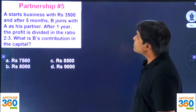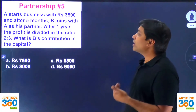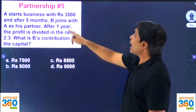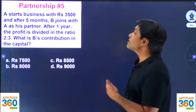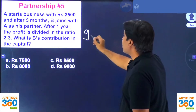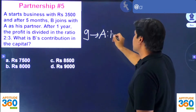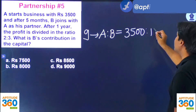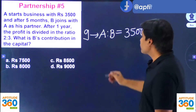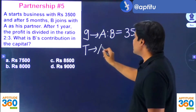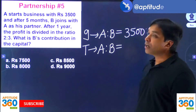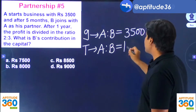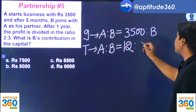The first question says that A starts a business with rupees 3500 and after 5 months B joins A as his partner. The amount B invested has not been given and that is what they are asking. After 1 year the profit is divided in the ratio of 2 to 3. What is B's contribution in the capital? Investment of A is 3500 rupees, and B's investment is unknown. A is in the business for 12 months whereas B is in the business for 7 months.